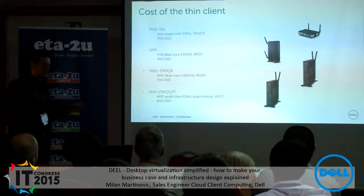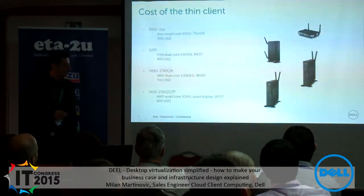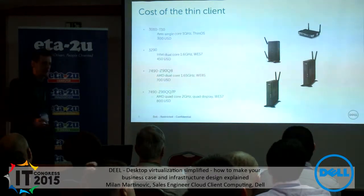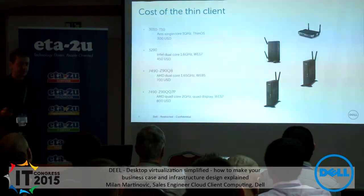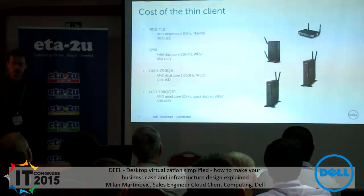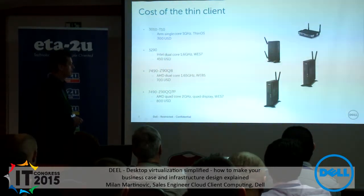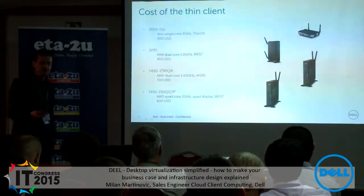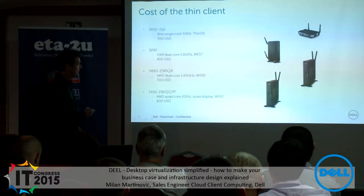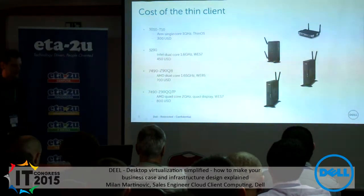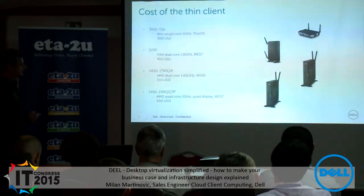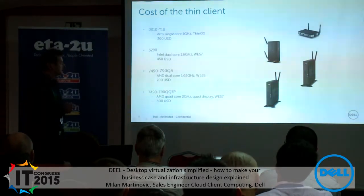This is what you need on the infrastructure side for licensing and components. On the endpoint side, best practice is to use a thin client. I've listed a few characteristic models here — we have a much broader portfolio, but these show the price range. The R04 model for standard office use is around $300. The 3290 is the latest model — dual-core Intel 1.6 GHz, running Windows 7 Standard, around $450. Another model runs Windows 8 Standard with AMD dual-core 1.65 GHz at around $700. A quad-core 2 GHz model with quad display capability, for advanced multimedia and graphics requirements, is around $500.